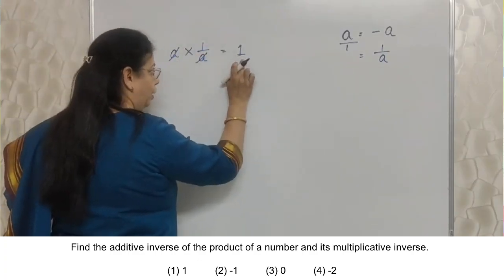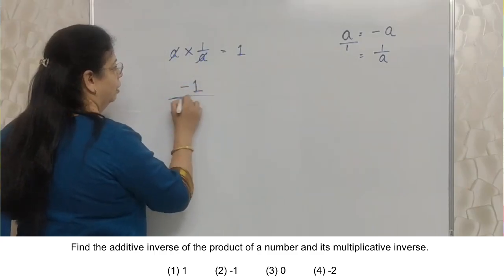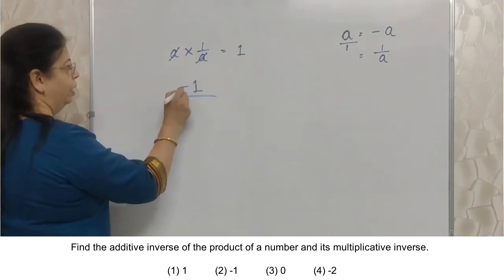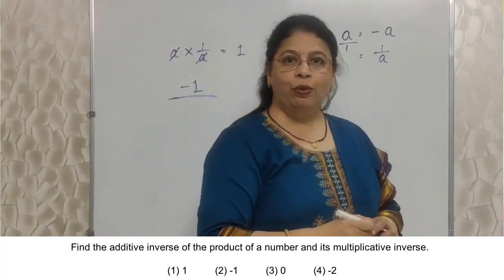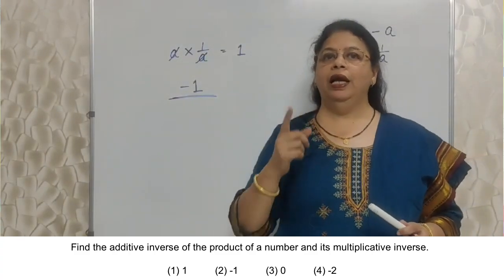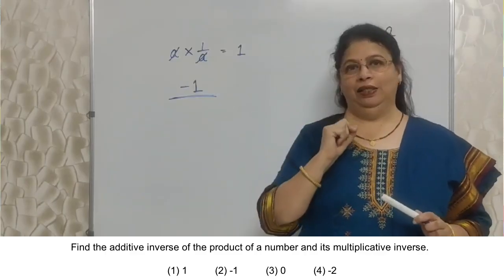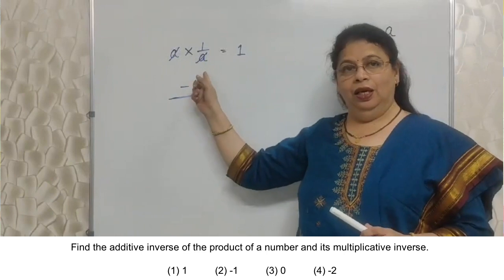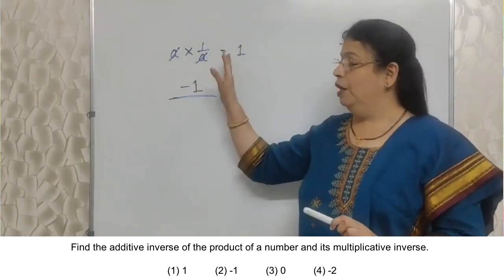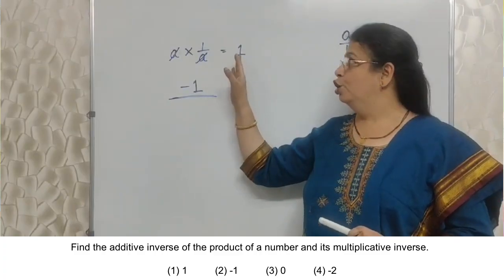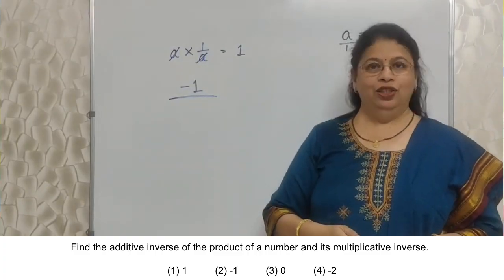Now we have found out the product. Iska additive inverse kya hai? Minus 1. This step will decide whether you are going to get 2 marks or no. That's why I keep on telling you reading part has to be done properly. Read the sum properly what they have asked. Because if you know this, everything, what is multiplicative inverse, what is additive inverse, you have done everything correctly. And you stop here. 2 marks gone. We can't afford that. Right? Chalo aage barhte.